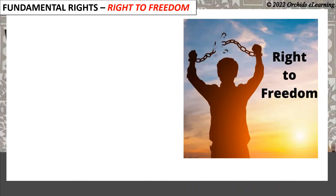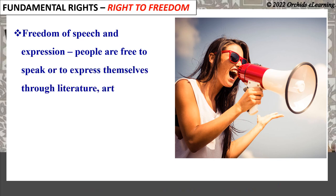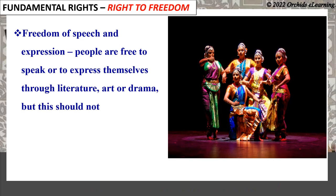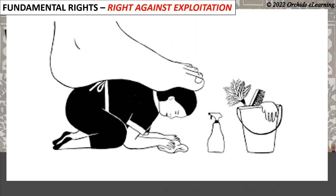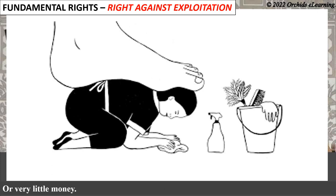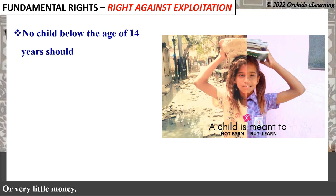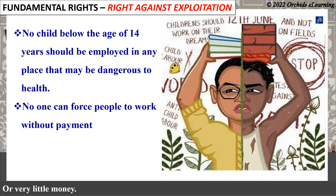Right to Freedom: People are free to speak or to express themselves through literature, art, or drama — but this should not be hurtful to others. There is also protection of a person's life and freedom. Right against Exploitation: Exploitation means to treat someone unfairly, especially making people work for no money or very little money. No child below the age of 14 years should be employed in any place that may be dangerous to health. No one can force people to work without payment or for very little payment.